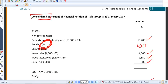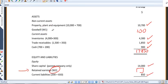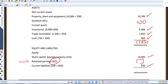So now if I wanted to, I could add up all of the assets of the A group. So that the total assets are 17,850.